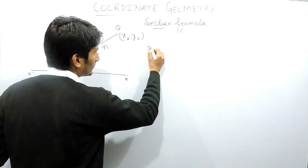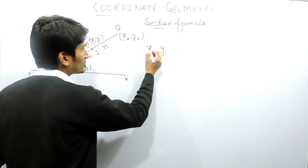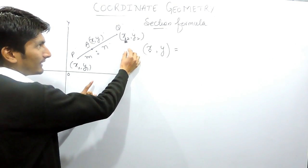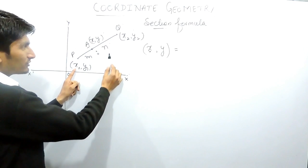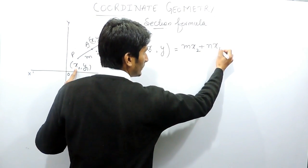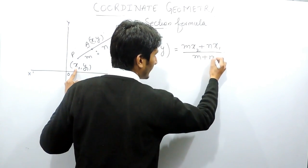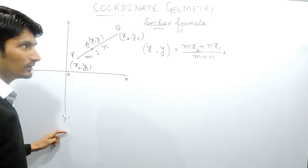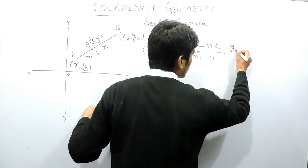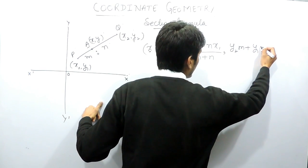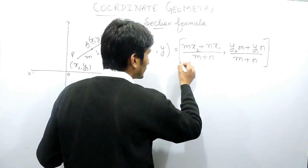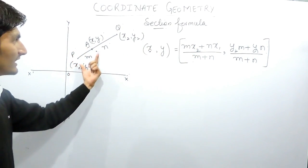The coordinate of A, which is x and y, are basically equal to: for the x-coordinate, we multiply x2 with m and x1 with n, giving us m·x2 plus n·x1 in the numerator, with m plus n in the denominator. Similarly, for the y-coordinate, we multiply y2 with m and y1 with n, giving m·y2 plus n·y1 over m plus n. So these are the coordinates of point A which divides the line in ratio m to n.